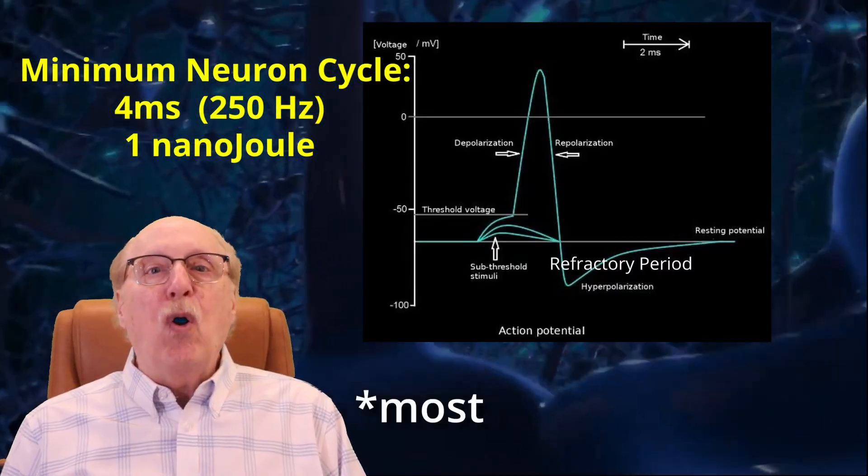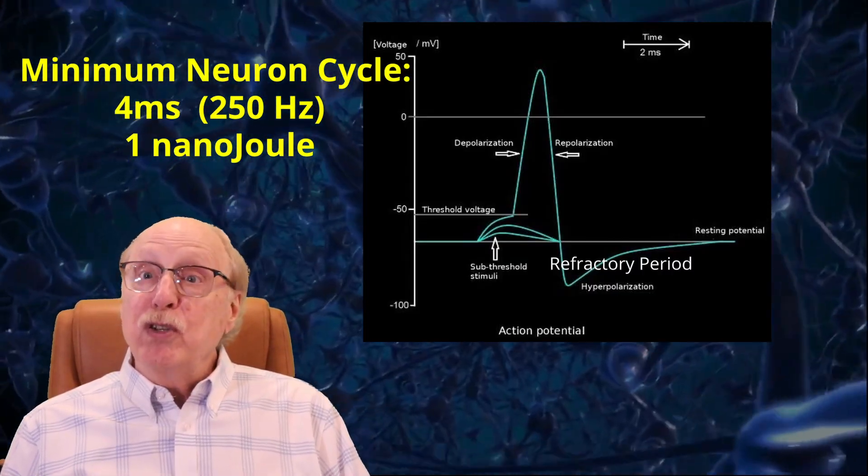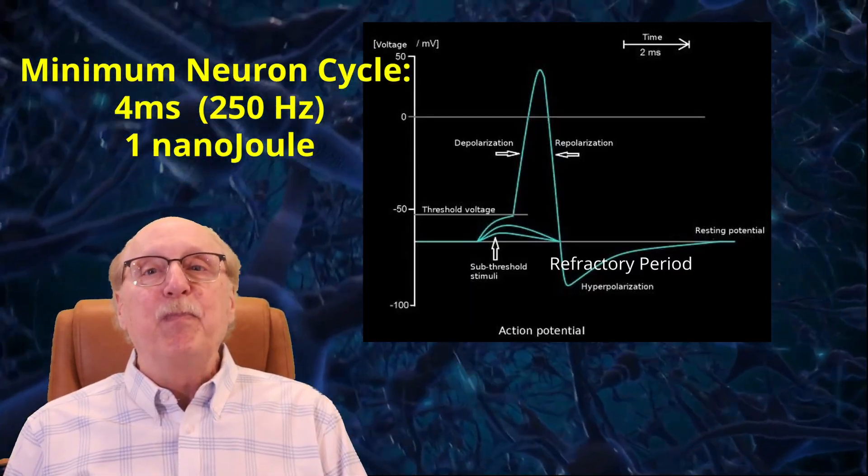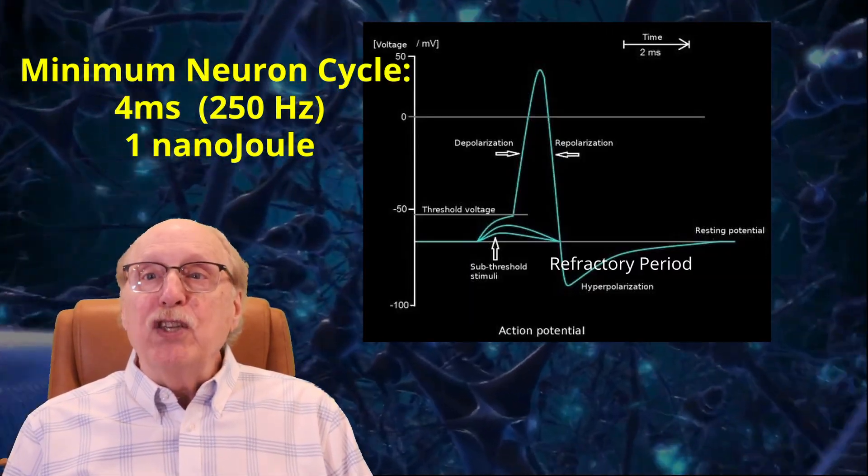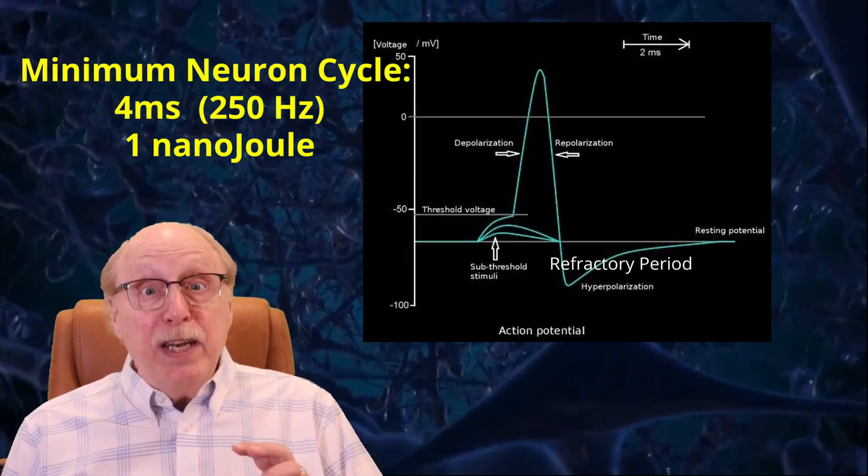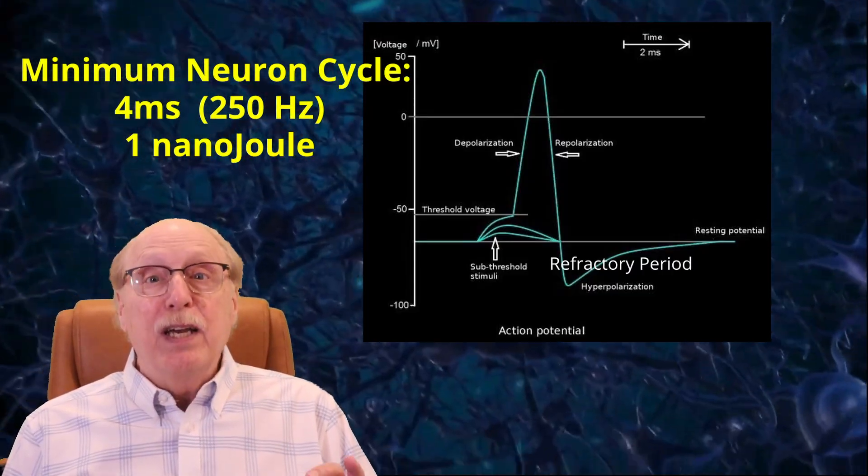After the neuron fires, all the ions and neurotransmitters are sent back to their starting locations so the process can repeat. This whole firing cycle takes about 4 milliseconds and uses about a nanojoule of energy, a tiny amount.